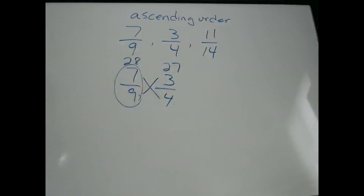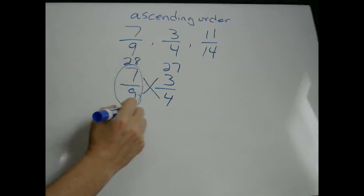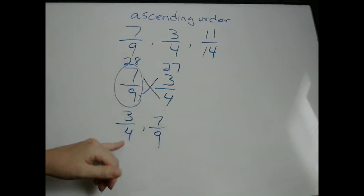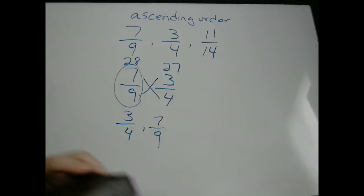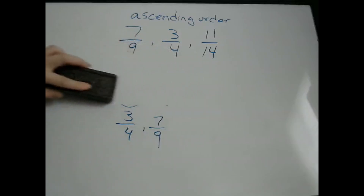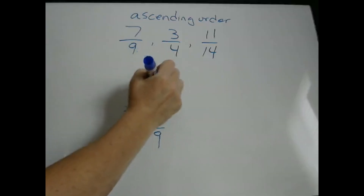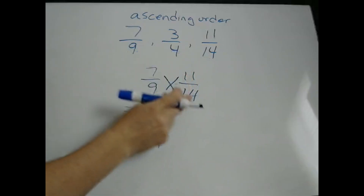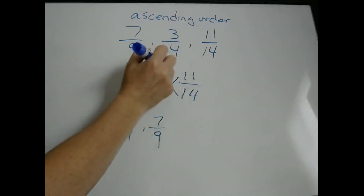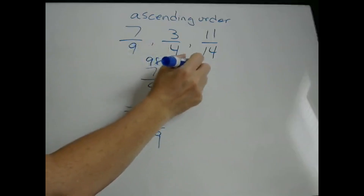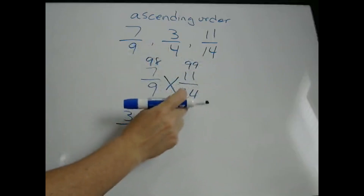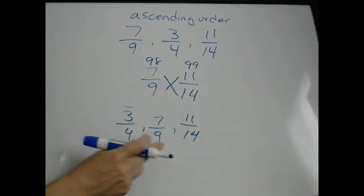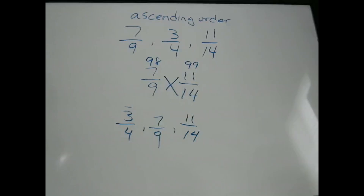Those numbers, 28 and 27, are just used to compare — they don't mean anything else. So we know 3 fourths is less than 7 ninths, meaning in ascending order 3 fourths comes before 7 ninths. Then we compare 7 ninths and 11 fourteenths by cross-multiplying: 7 times 14 is 98, and 11 times 9 is 99. Since 99 is bigger than 98, 11 fourteenths is bigger than 7 ninths. So in ascending order: 3 fourths, 7 ninths, 11 fourteenths — the same result we got with decimals.